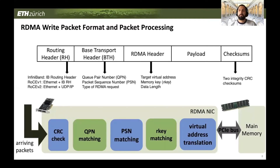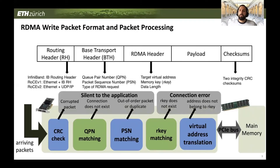When a packet arrives at the NIC, it goes through five checks: integrity checks, QPN and PSN matching — where QPN is the Queue Pair Number and PSN is the Packet Sequence Number — and then, in the case of an RDMA write, R-key matching and virtual address translation. Interestingly, from the application's viewpoint, errors in the first three checks are silent and not reported. Errors in R-key matching or address translation will produce a connection error at the application.